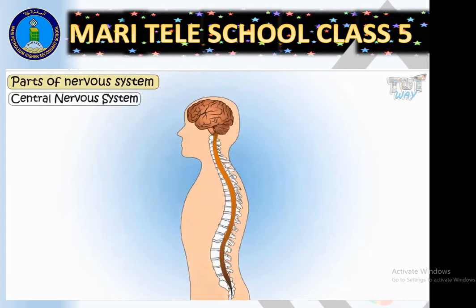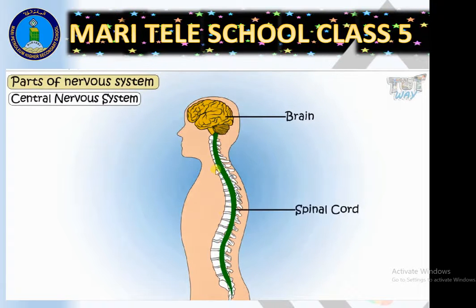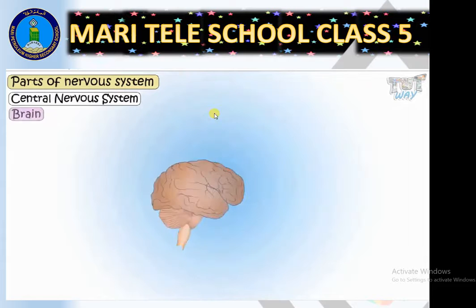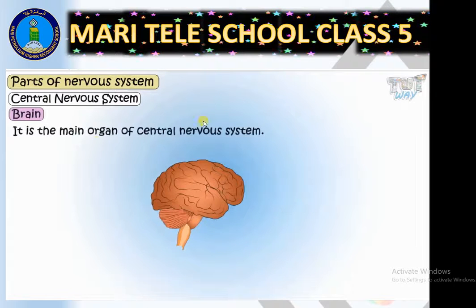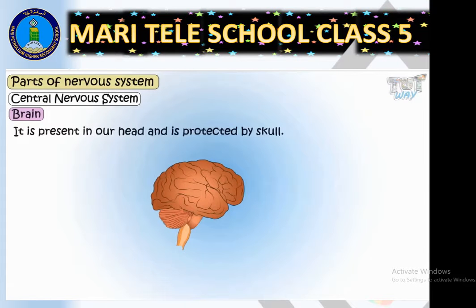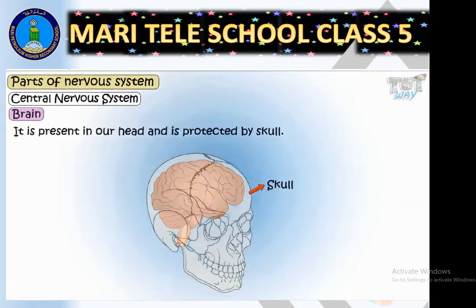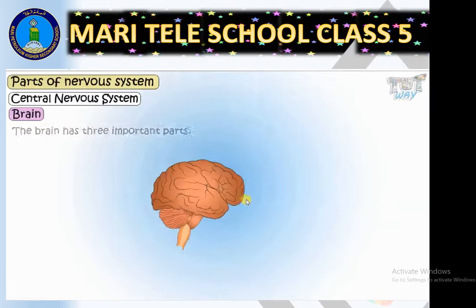The central nervous system consists of the brain and the spinal cord, as shown in the diagram. The brain is the main organ of the central nervous system — it is the control center. It is present in our head, and Allah has protected the brain with a skull. We must be careful and avoid head injuries. This is the skull which protects it.